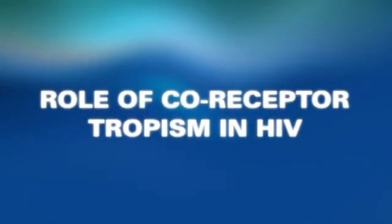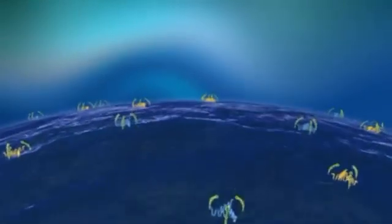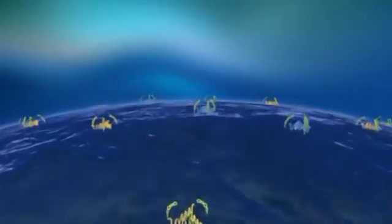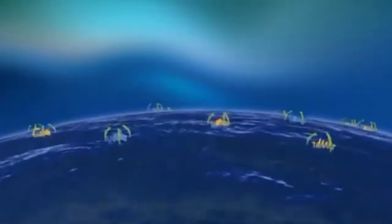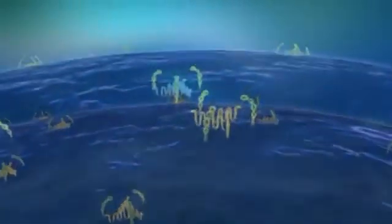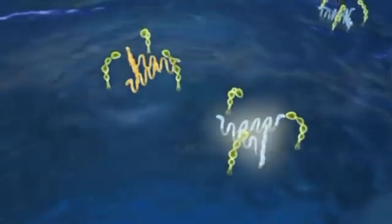The co-receptors to which HIV-1 can bind are part of the chemokine co-receptor family of proteins. The virus must bind to one of two chemokine co-receptors on the host CD4 T cell surface in order for infection to occur. These co-receptors are CCR5 or CXCR4.